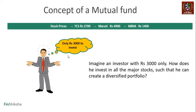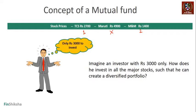Let's first understand the concept of a mutual fund. Say we have an investor with 3,000 rupees to invest. We've read that diversification gives you a good risk-adjusted portfolio, but that may not be possible with a 3,000 rupee amount. He looks at TCS at 2,700, Maruti at 4,900, and M&M at 1,400. Practically, he can either buy one share of TCS or two shares of M&M. Since shares cannot be purchased in fractions, he cannot buy Maruti at all.